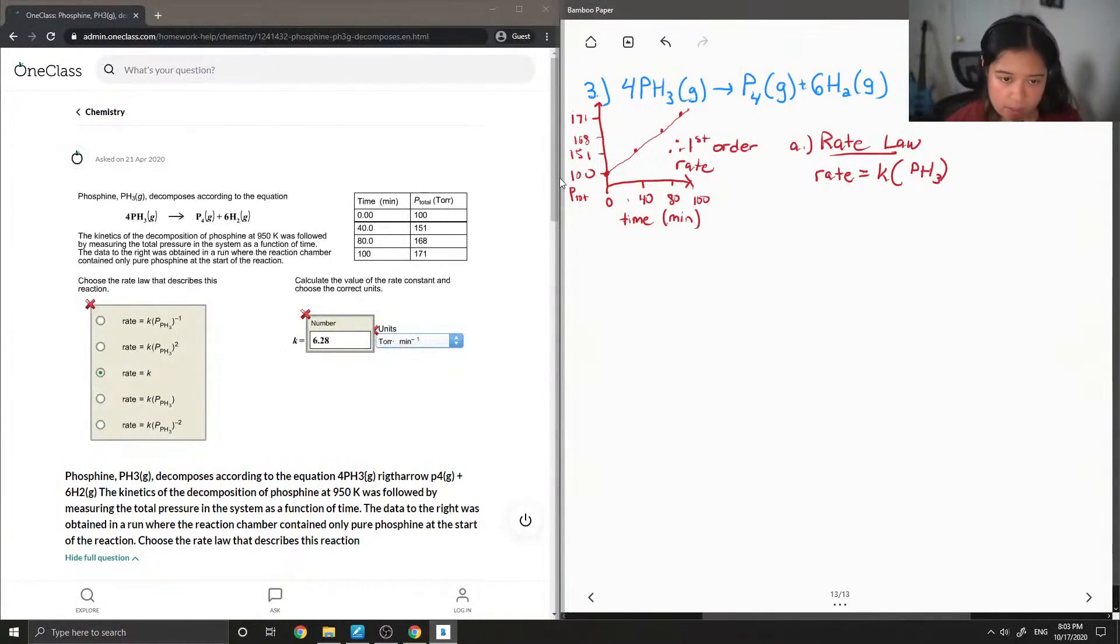Okay, so next I'm just gonna write down everything that we know. So bear with me while I do this. So our P initial, which is the pressure that we had at the beginning of the experiment, is 100 torr. And then I'm just gonna take one of the values at a given time. So I'm gonna look at the pressure after 40 minutes, and that is equal to 151 torr. But you can use any given x or y values.